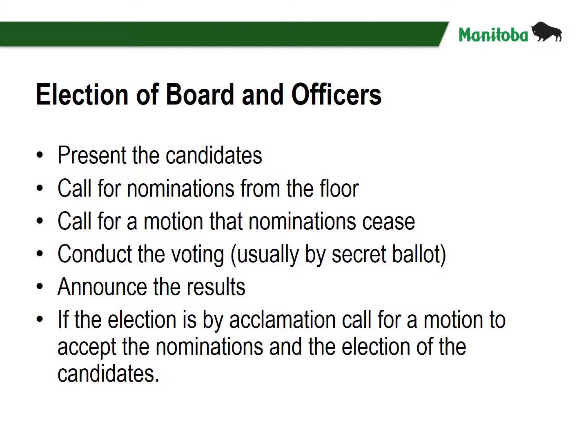During the elections, the committee will present the candidates and call for nominations from the floor three times, spaced throughout the meeting, as you may have noticed on the sample agenda. This is a traditional method of handling nominations; however, this varies in organizations. Some will do three calls at once, and others have moved to only doing one call for nominations, such as the Manitoba Association of Parliamentarians. The committee will call for a motion that nominations cease, conduct the voting usually by secret ballot, announce the results, and if the election is by acclamation, call for a motion to accept the nominations and the election of the candidates.